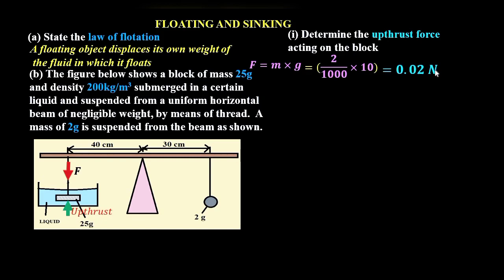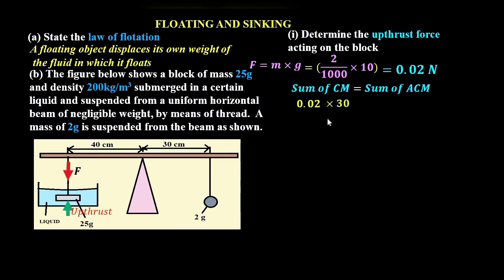Applying the principle of moments: for a system at equilibrium, the sum of clockwise moments equals the sum of anti-clockwise moments about the same pivot point. The clockwise moment is the force from the 2-gram mass — 0.02 newtons — times its perpendicular distance from the pivot, which is 30 centimeters.